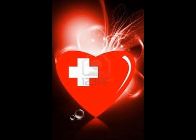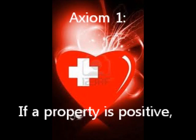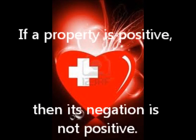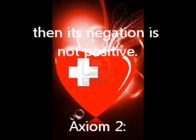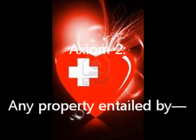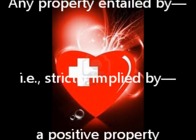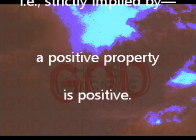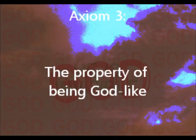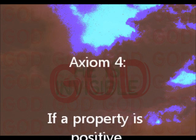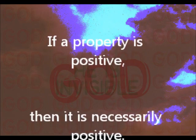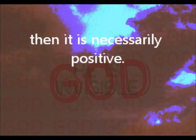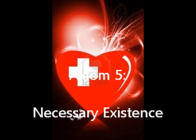This is how he begins the definitions, and now we go into the axioms. Axiom one: if a property is positive, then its negation is not positive. Axiom two: any property entailed by — in other words, strictly implied by — a positive property is positive. Axiom three: the property of being godlike is positive. Axiom four: if a property is positive, then it is necessarily positive.